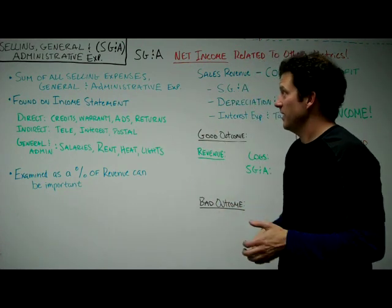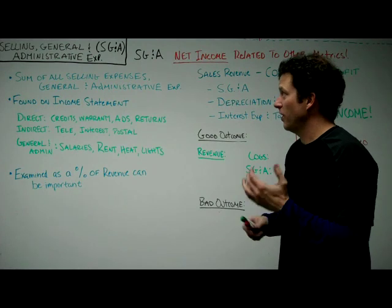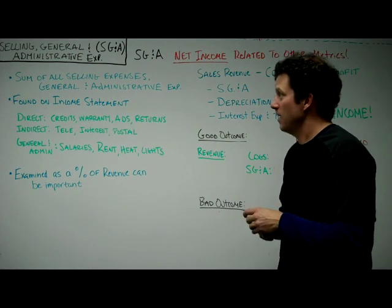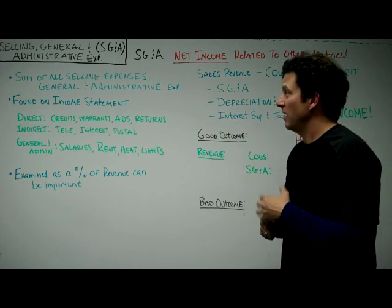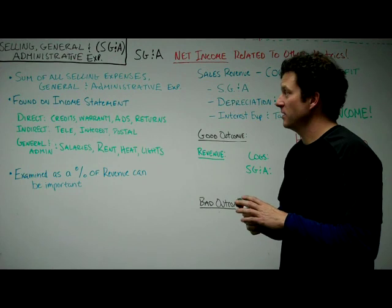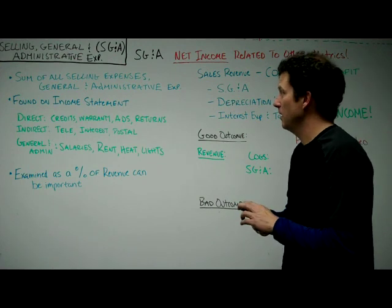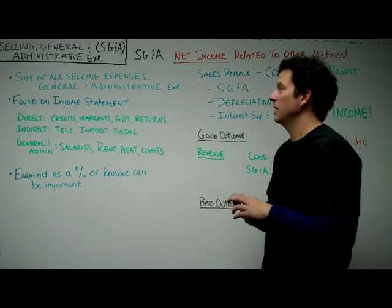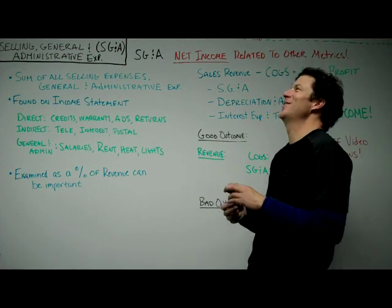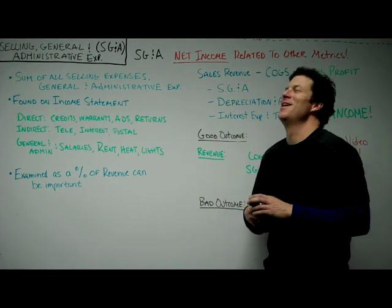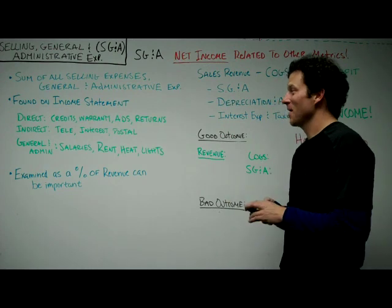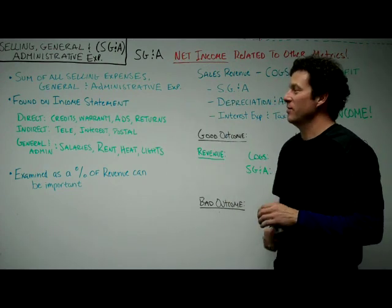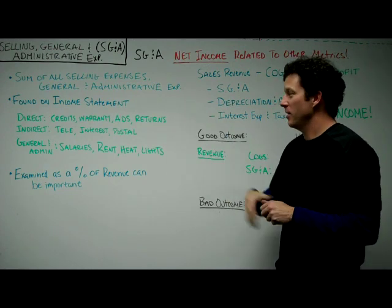So what exactly is it? It's actually very close to its name. It's a sum of all the selling expenses, general expenses, and administrative expenses of running the company. These things are found on the income statement.